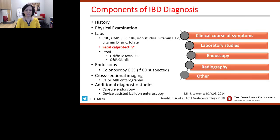How do we diagnose inflammatory bowel disease? We gather a history from our patients and perform a physical examination. Laboratory testing is important to evaluate for evidence of anemia, malabsorption of vitamins or nutrients, and biomarkers. We'll discuss the role of fecal calprotectin, stool studies to rule out infection, endoscopy, cross-sectional imaging — specifically for Crohn's disease and small bowel evaluation — as well as other additional diagnostic studies.